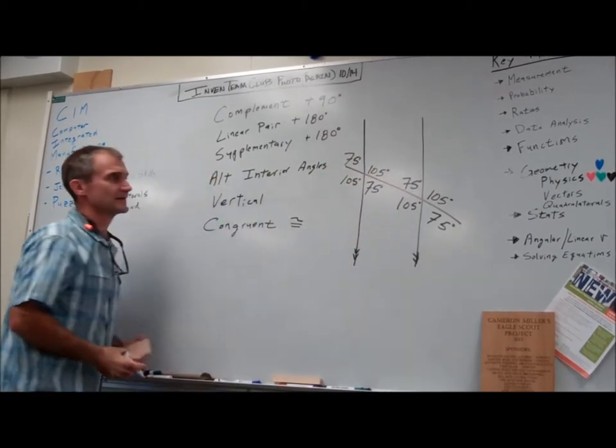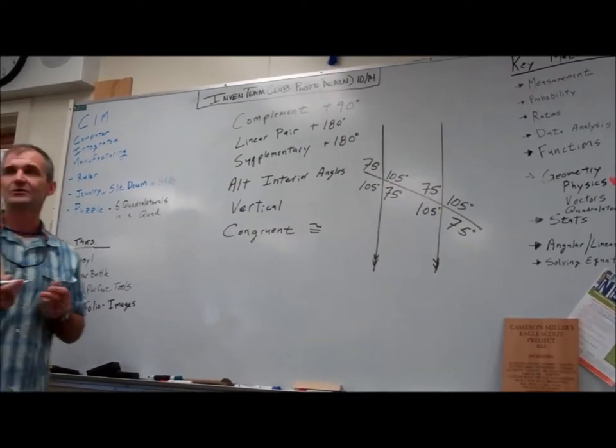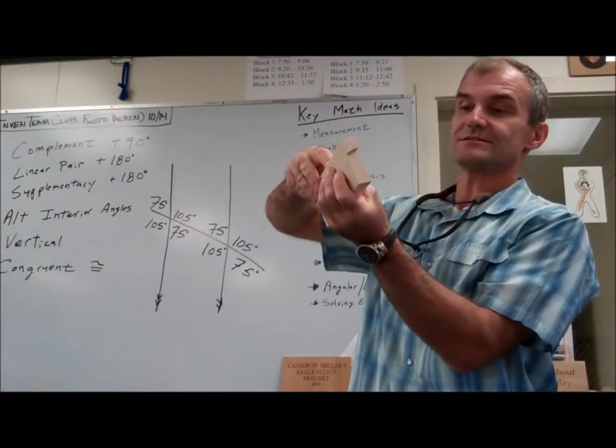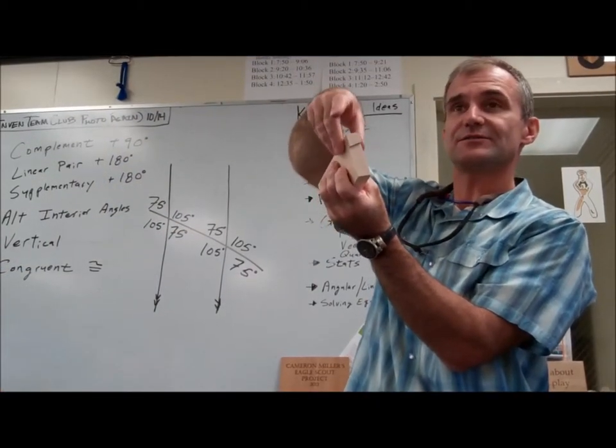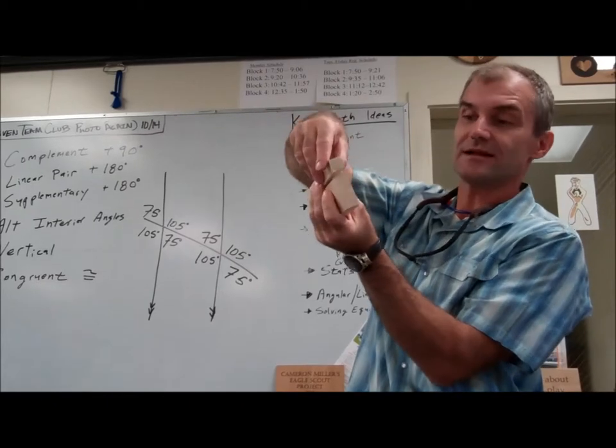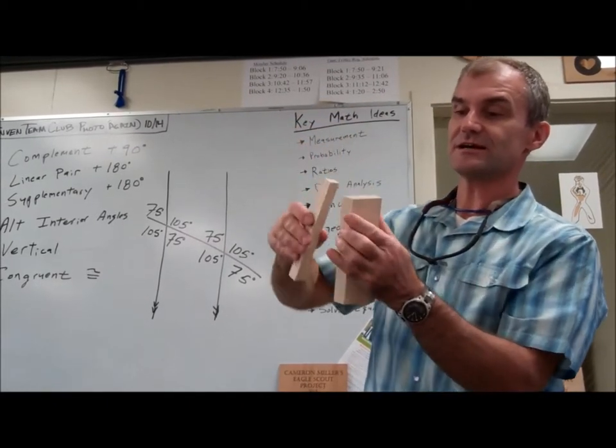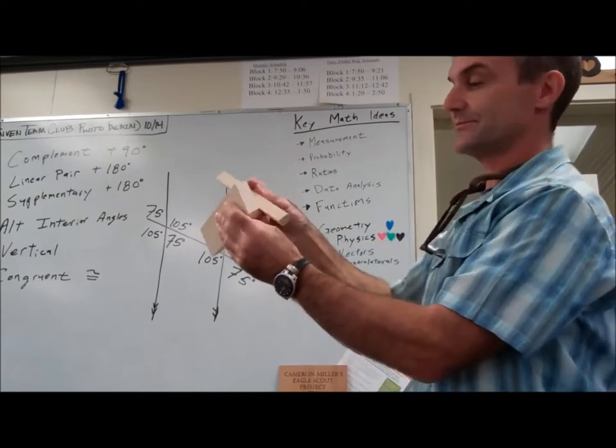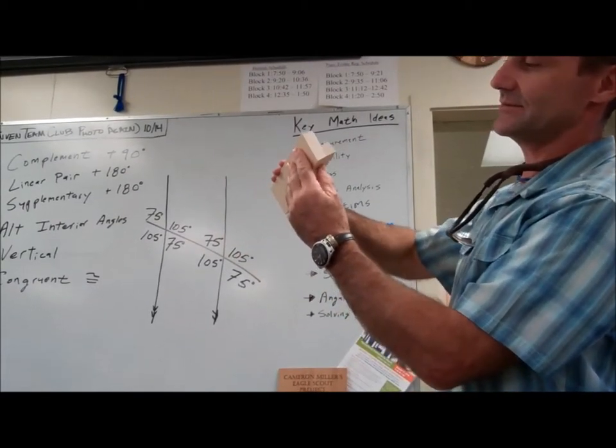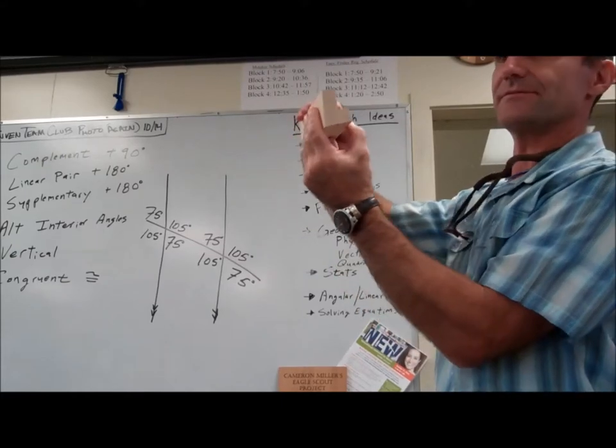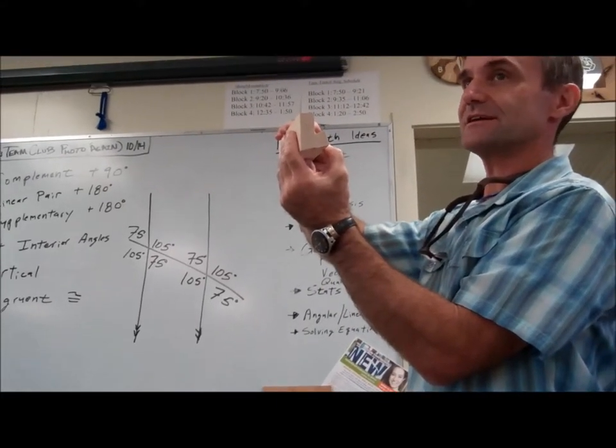So again, parallel lines cut by transversal. If I know one of the angles, I can find all the others. I have these two parallel lines that are the surfaces of the board. I cut them with a transversal. And then these angles right here, there's the front of the board, will line up like that. Any questions on any of that?